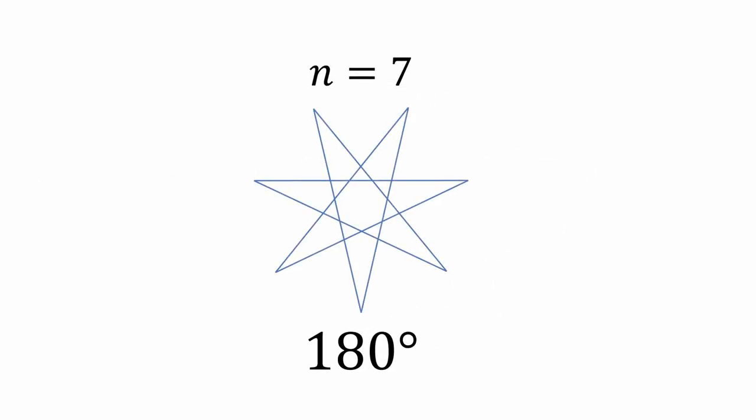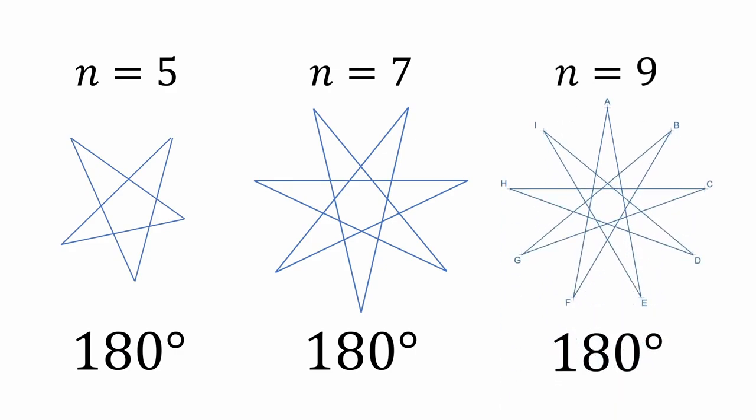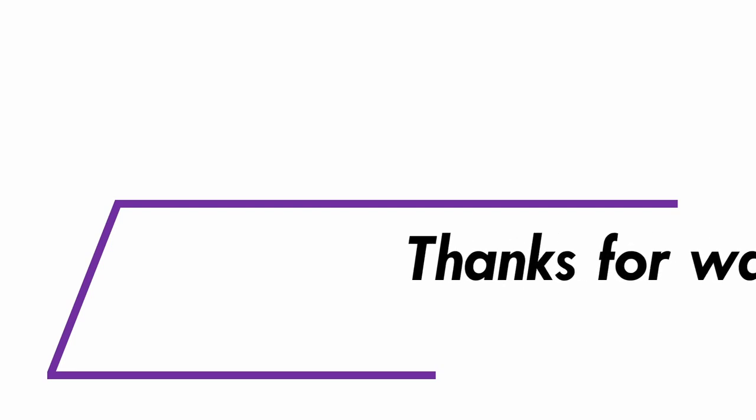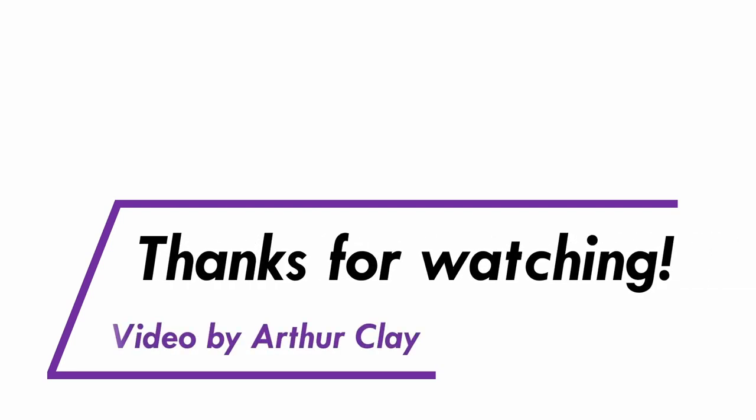By the way, the exact same line of reasoning we just used can easily be extended for any star with odd vertices. The sum of all its vertex angles will always equal 180 degrees. Let me know in the comments below if you got the answer and if you got it using a different approach. And be sure to subscribe for a new video every week featuring puzzles, problems, applications, and explorations. Thanks for watching and see you soon.